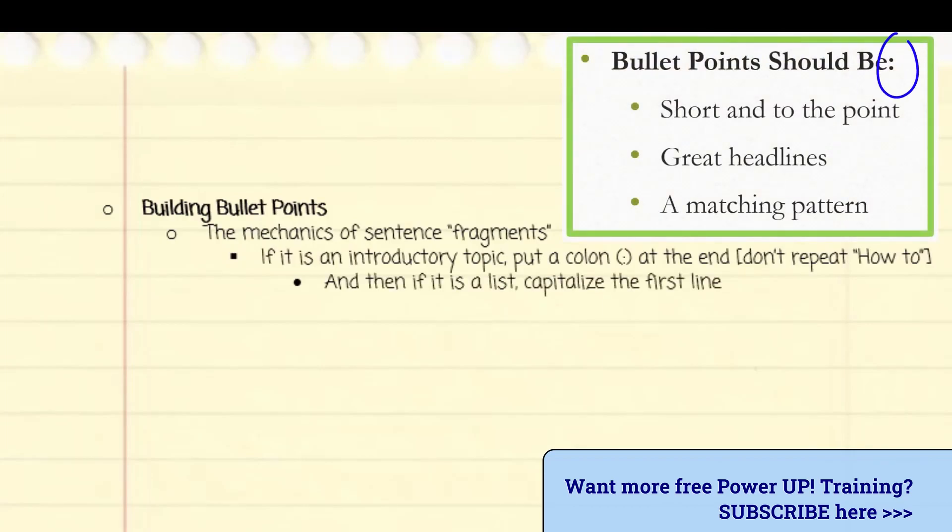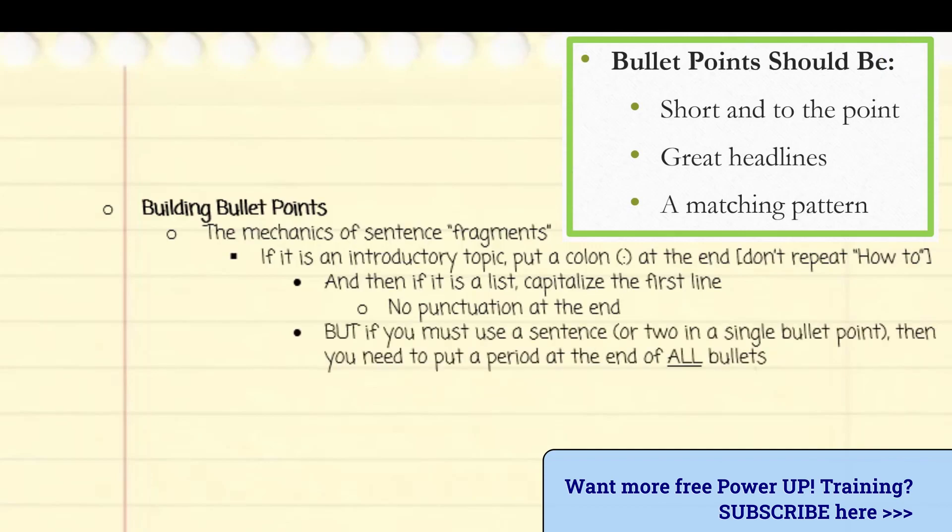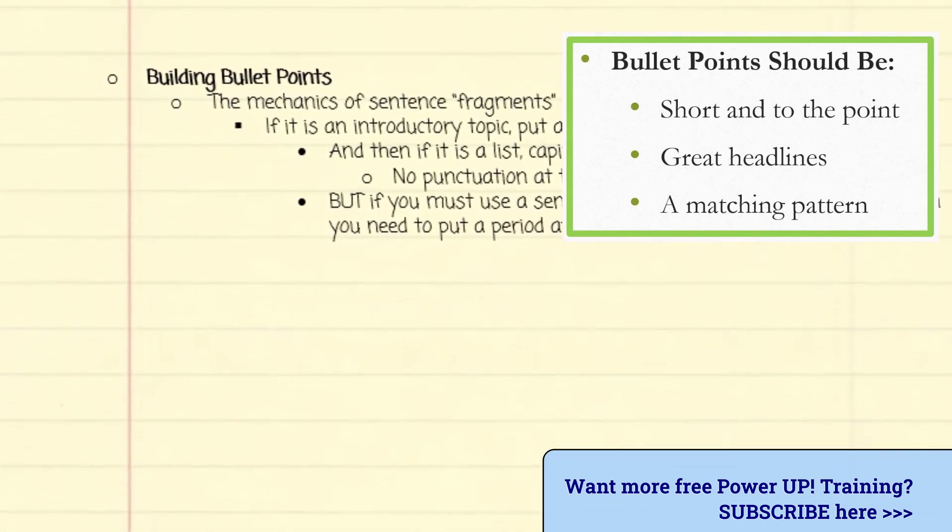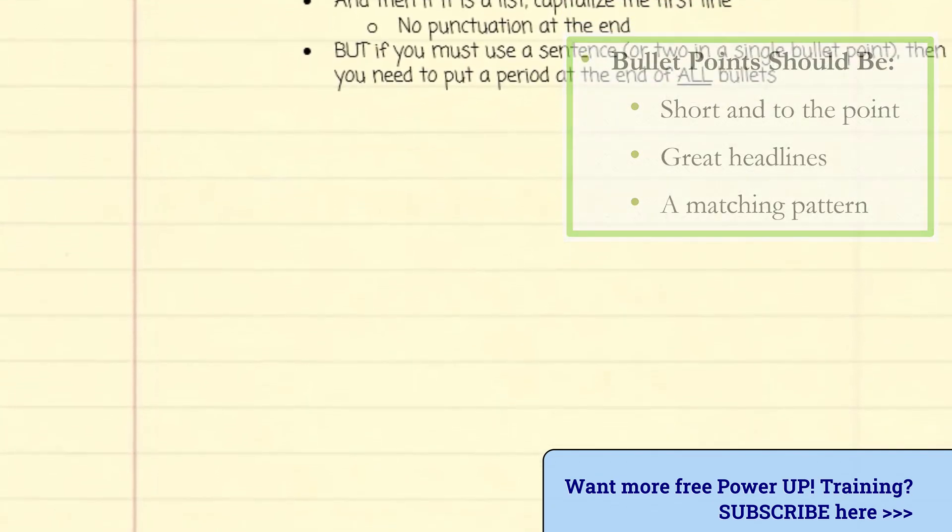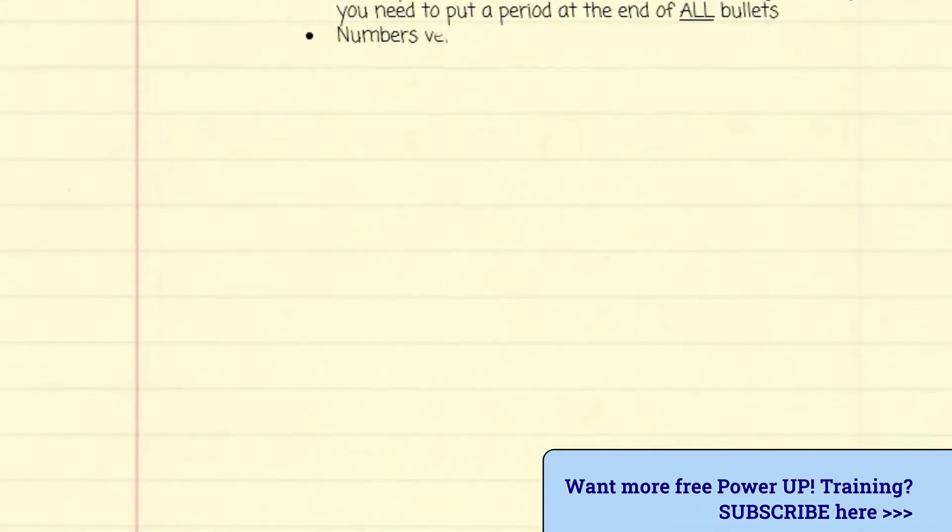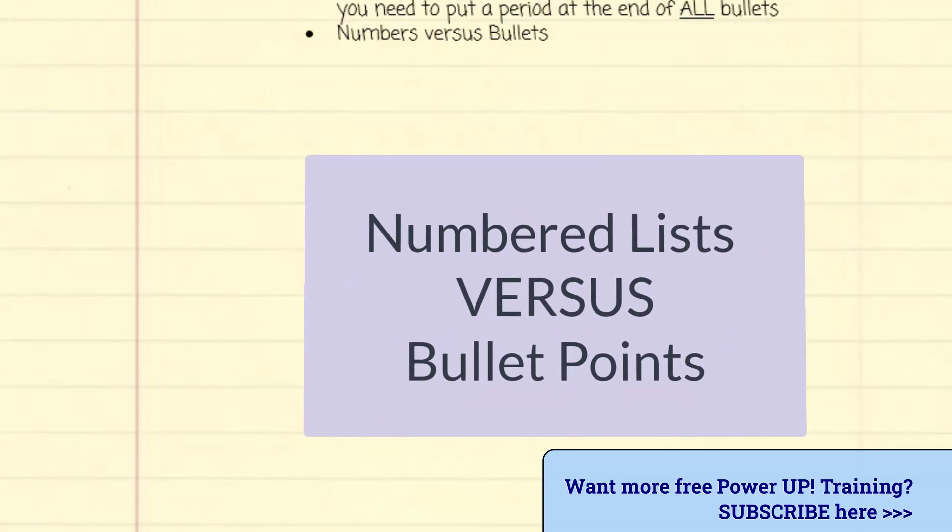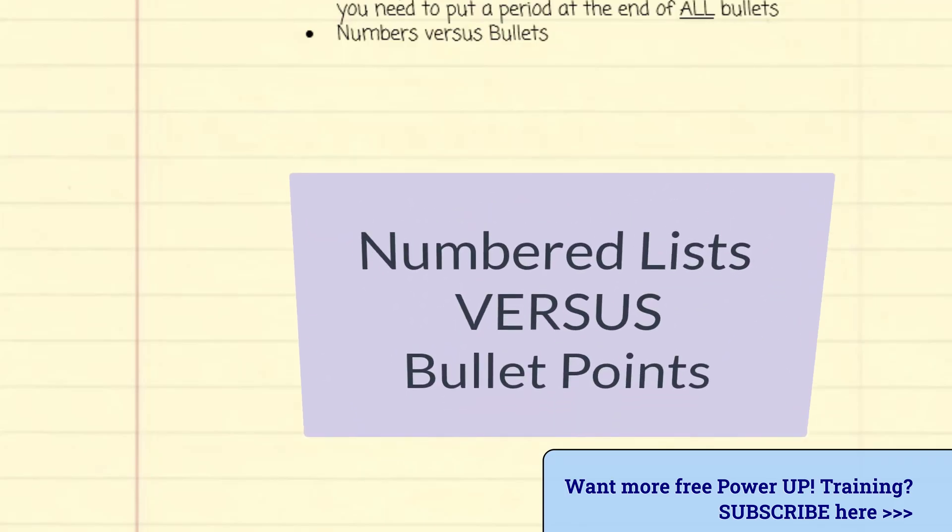Note the use of the colon and no period or commas in the list, nor the word and on the next to the last line. Plus look at the capitalization of the first line. It is capitalized like a newspaper headline, but only the first letter on the sub bullet points.